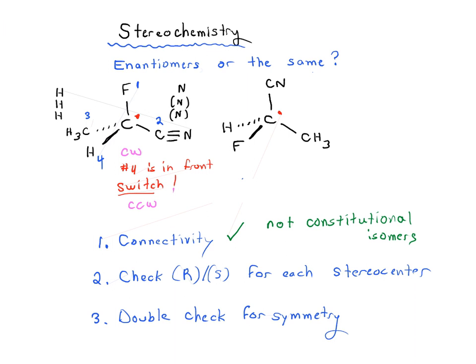And if it's counterclockwise, that makes it S. Okay, so that's what it would look like if number four was in the back - we would actually see that one, two, and three go in the direction of counterclockwise.